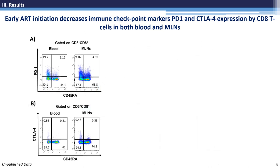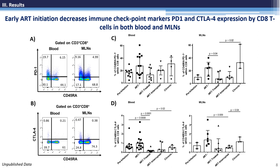Next, we evaluated the expression of immune checkpoints PD-1 and CTLA-4, since their expression has been linked to T cell dysfunction and senescence during HIV infection. Here, we found that SIV infection increased the expression of PD-1 and CTLA-4 in both blood and mesenteric lymph nodes, and that early ART initiation decreased their levels in both compartments.